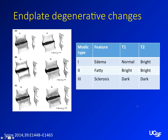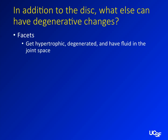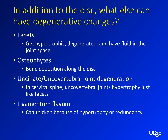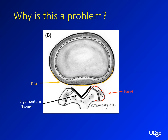You can have other degenerative changes — the facets can degenerate and have fluid in them. You can get osteophytes, bone deposition along the discs, the uncinate processes, and adjacent to the facets, which tends to narrow all those spaces. The ligamentum flavum can get thick or redundant as well. So think about it: you have your disc, facet, ligamentum flavum, and a little room for the spinal canal. But as the disc bulges out, the spinal canal gets narrow, the nerve root exits get narrow, the facets degenerate, and the ligamentum flavum thickens — suddenly your spinal canal is significantly smaller.